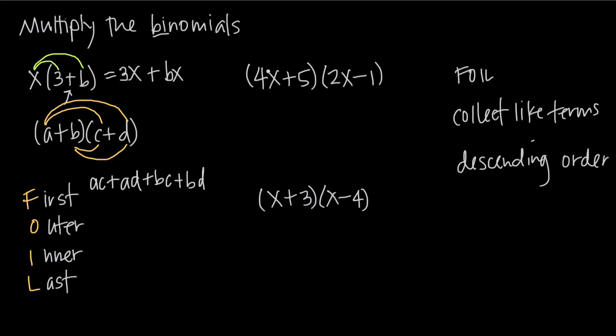So here if we look at our first two terms, 4x and 2x, we'll multiply those together and we'll get 8x squared. Then we'll multiply our outer terms, that's going to be a positive 4x, times a negative 1, it's going to give us a negative 4x, remember because those signs are different, so we end up with a negative. Then the inner terms, positive 5 and positive 2x is a positive 10x. And then the last terms, positive 5 and negative 1 gives us a negative 5. So we FOIL'd.